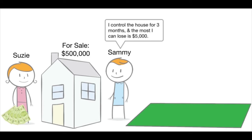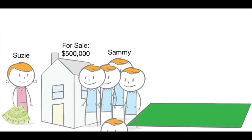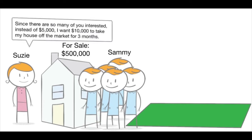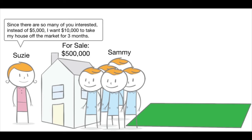Susie is happy to take the $5,000, as she had no guarantee anyone else would buy the house at her asking price, nor did she feel the nearby parcel of land would sell anytime soon. As a footnote: if Susie felt she was likely to attract another buyer soon, she would have demanded more than $5,000. Likewise with call options, the more the underlying asset is perceived to appreciate, the higher the premium demanded by the market.